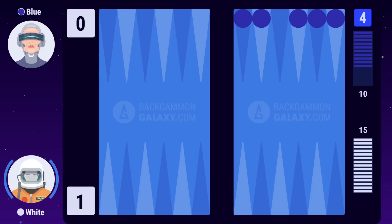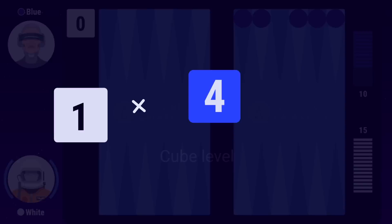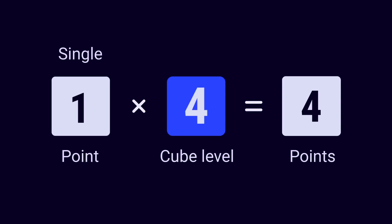In this example of white vs blue, the cube has a value of 4, as it was used twice during this game. White multiplies the 1 point from winning a single with the value of the cube. 1 times 4 equals 4 points, which is the final score of the game.